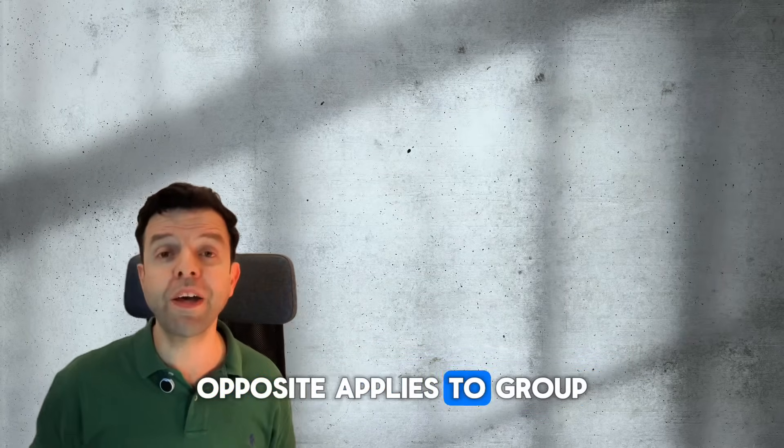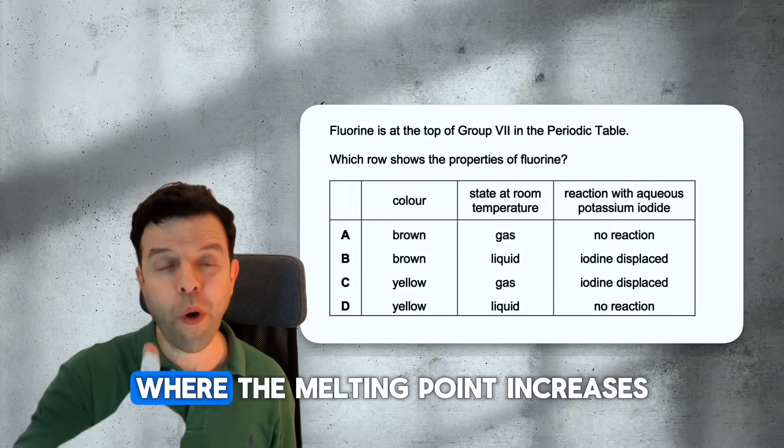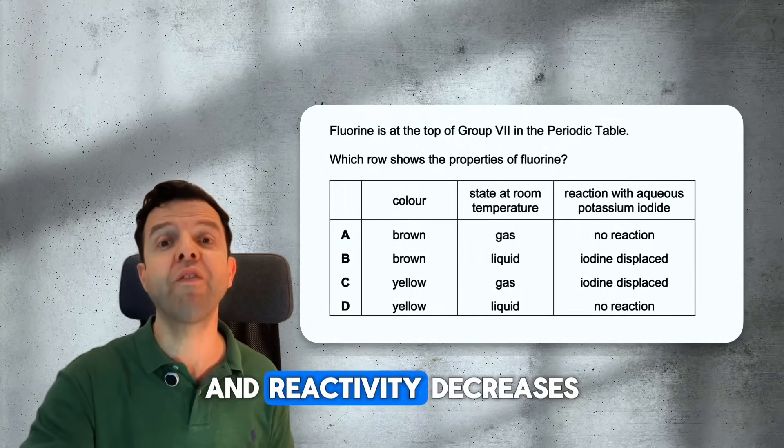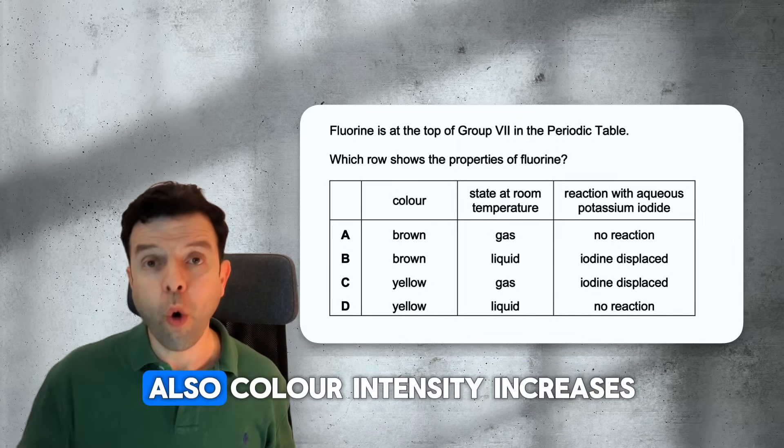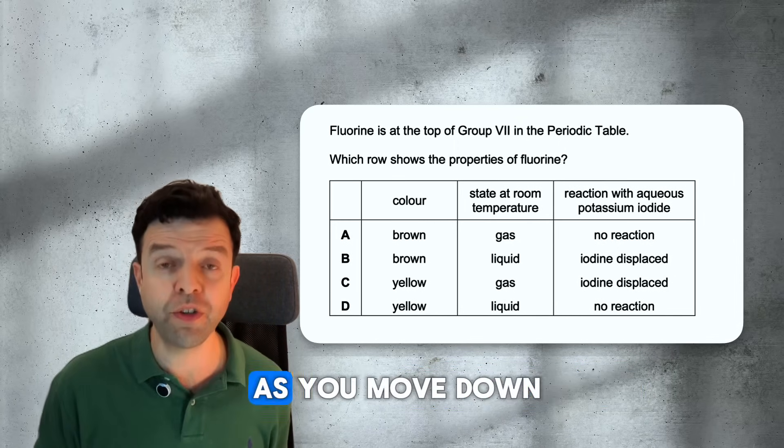Opposite applies to group seven or halogens, where the melting point increases and reactivity decreases. Also, color intensity increases as you move down.